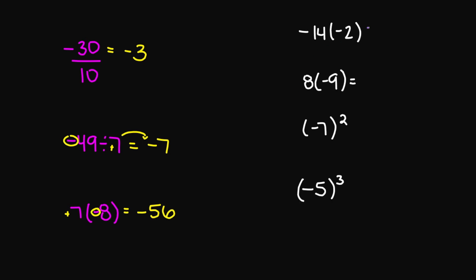Let's look at the ones on top. Negative 14 times negative 2 — you're going to get a positive answer, which is positive 28. Next: 8 times negative 9 is going to be negative 72. Next: negative 7 squared — don't forget the square means you're writing out negative 7 two times. So negative 7 times negative 7 is going to be a positive 49.